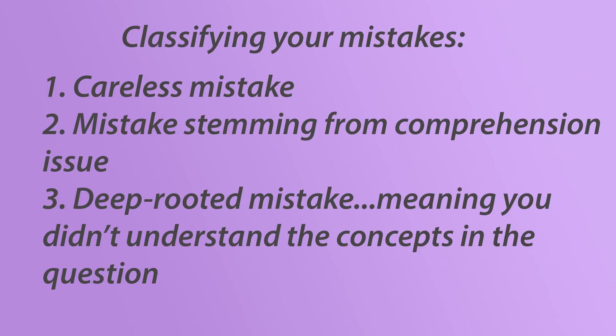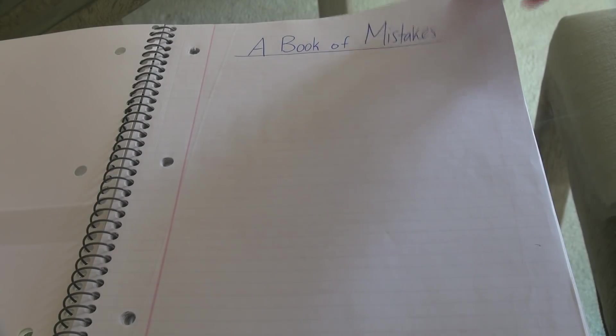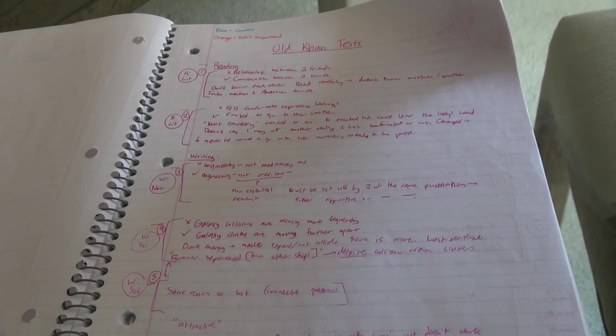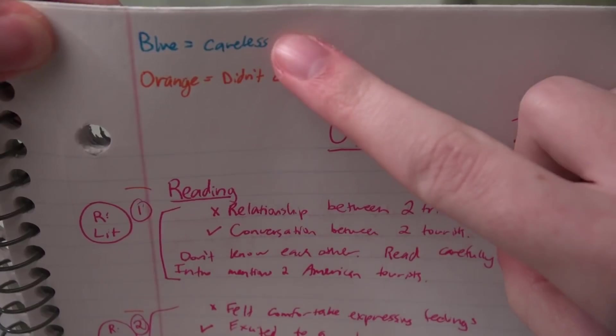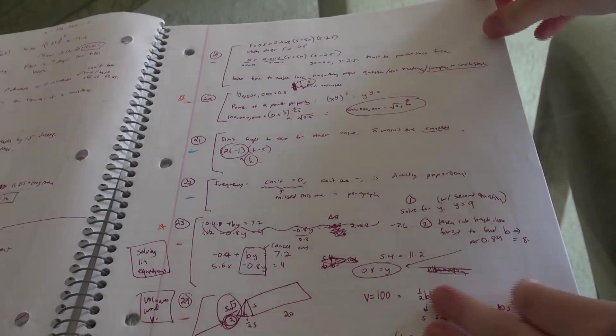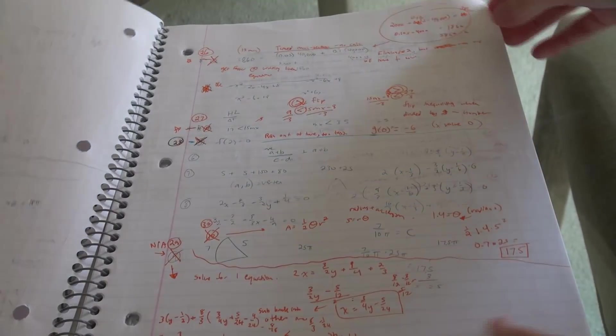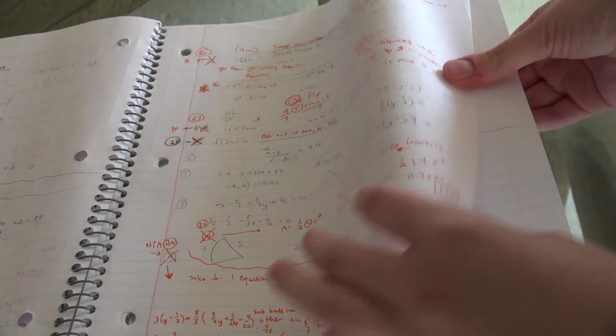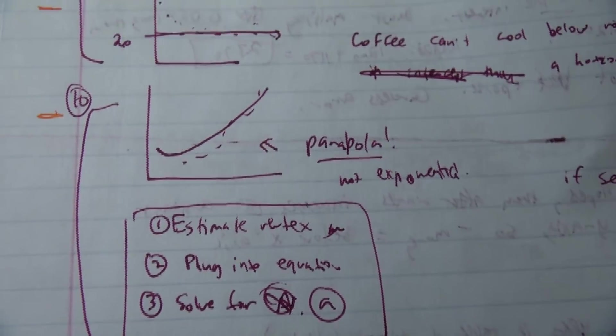It's important to identify which each mistake is after you make it, since this will give you a better understanding of if you have to master the concepts a little bit more, or if you've already got a good grasp on things and just need to work on time management or checking your work better. This is my notebook from when I was at the peak of my studying. First we have my Khan Academy mistakes, with blue lines as careless and orange as comprehension issues. Be sure to write down a little bit of each question to give context, the answer you put down, and the correct answer. I also made sure to write down any formulas I might have forgotten that would lead to shortcuts in solving the problems, or that were essential in solving them, along with the step-by-step process for some of them.